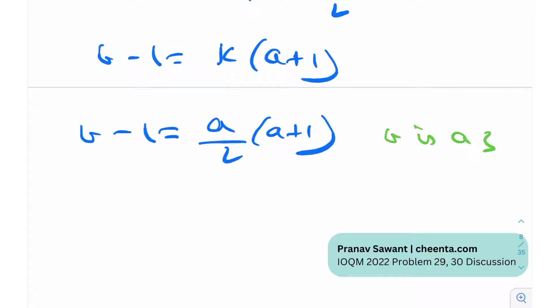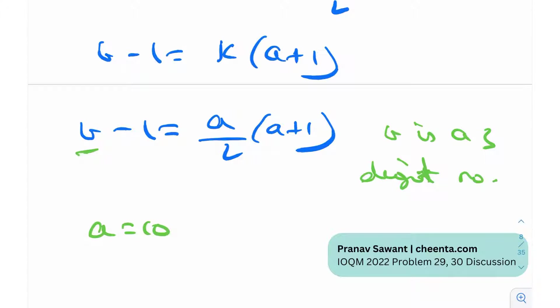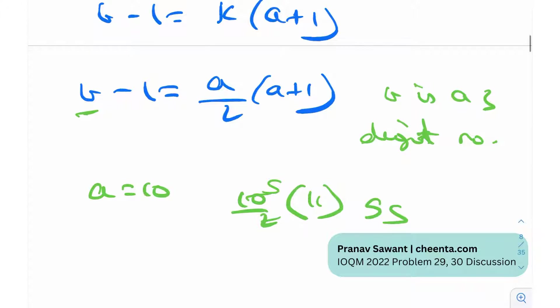There are only going to be some finite values of A for which this thing is a three digit number. So what will happen is there is going to be a minimum value of A for which b is a three digit number, there is going to be maximum value of A for which b is a three digit number. For example, if I plug in A is equal to 10, we get 10/2 times 11, so that will be 55, and so b would be 56. But b is a three digit number, so this does not hold true. However, if I take A is equal to 14, I will get 14/2 times 15 and that is 105, and b will be 106.